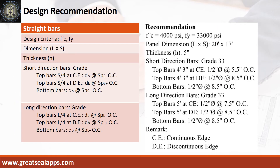Design recommendations: FC prime equals 4,000 PSI, FY equals 33,000 PSI, panel dimension 20 feet by 17 feet, thickness 5 inches. Short direction bars grade 33: top bars at continuous edge — half-inch diameter at 5.5 inches on center; top bars at discontinuous edge and bottom bars — half-inch diameter at 8.5 inches on center. Long direction bars grade 33: top bars at continuous edge — half-inch diameter at 7.5 inches on center; top bars at discontinuous edge and bottom bars — half-inch diameter at 8.5 inches on center.